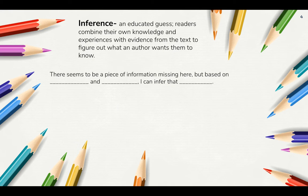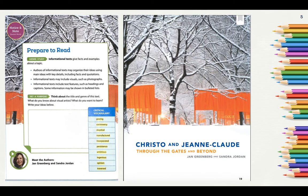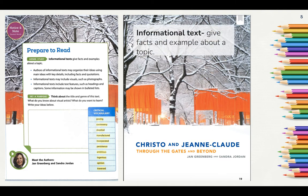Today, you will be practicing making inferences when you read Christo and Jean-Claude. Turn to pages 18 and 19 in your student handout copy. We will be reading an informational text titled Christo and Jean-Claude. Informational text gives facts and examples about a topic. Authors of informational text may organize their ideas using main ideas with key details, including facts and quotations. Informational text may include visuals such as photographs, and text features such as headings and captions. Some information may be shown in bulleted lists.